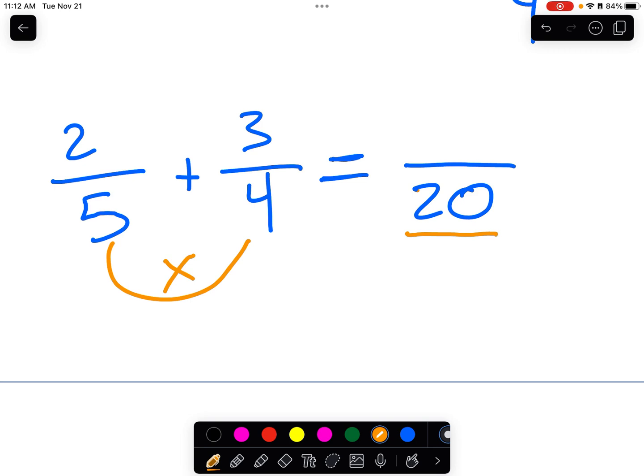So here, we did 5 times 4 to get 20. So now whatever we do to the denominator, we do to the numerator. So we did 5 times 4 to get 20. And now we did 2 times 4. And that gives us 8.